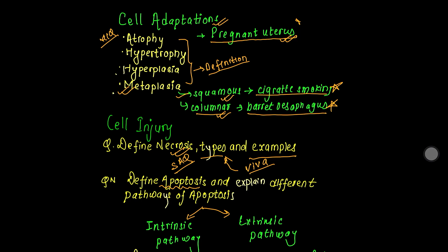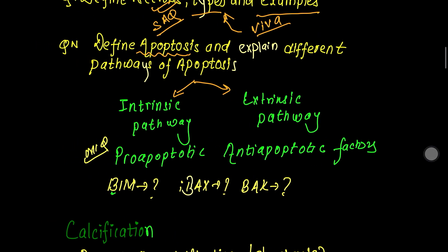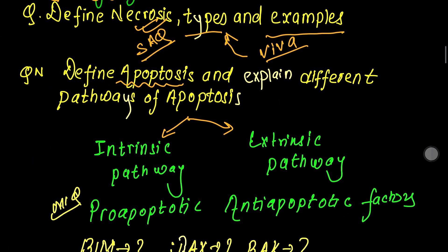Next topic is cell injury, which includes necrosis and apoptosis. It is important to know that necrosis is mostly passive. Necrosis types and examples are frequently repeated in exams.